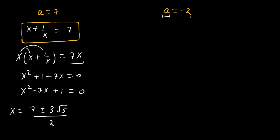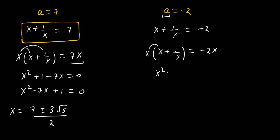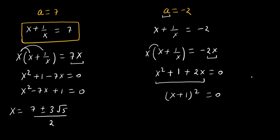For a = -2: since a = x + 1/x, we have x + 1/x = -2. Multiplying both sides by x: x² + 1 = -2x, so x² + 2x + 1 = 0, which is the perfect square (x + 1)² = 0. Therefore x = -1.